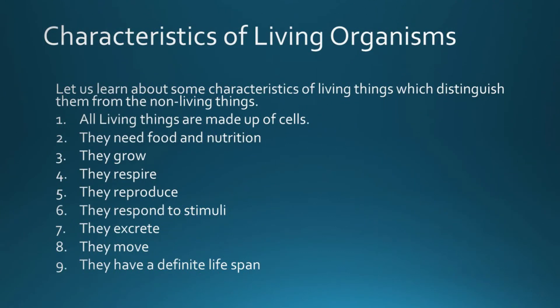Now, characteristics of living organisms. All living things have mass and occupy space. Let us learn about the characteristics of living things which distinguish them from non-living things. The following characters distinguish them: all living things are made up of cells, they need food and nutrition, they grow, they respire, they respond to stimuli, they excrete, they move, and they have a definite life span.